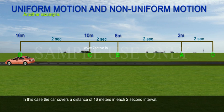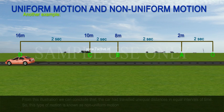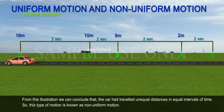In this case, the car covers a total distance of 16 meters but with unequal distances in each 2 second interval. From this illustration, we can conclude that the car had travelled unequal distances in equal intervals of time. So, this type of motion is called non-uniform motion.